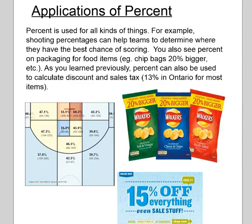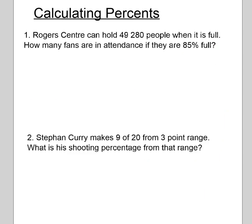Here's an example — the Jays look at attendance records a lot. Rogers Centre can hold 49,280 people. How many people would be there if it's 85 percent full? The people who own the Jays look at these stats to see how full their stadiums are and what they need to do to attract fans. All we have to do is find out what 85 percent of a full stadium is.